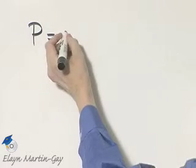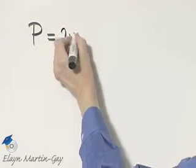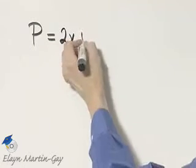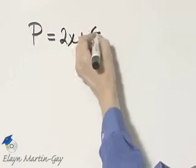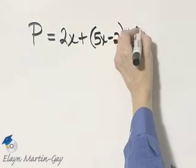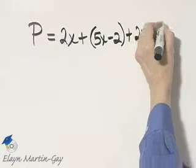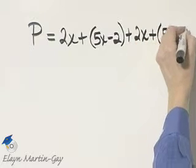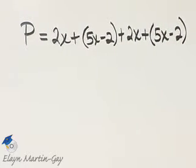So the perimeter will be 2x, the length of one side, plus the length of the next side, 5x minus 2, plus 2x plus 5x minus 2. That represents the perimeter.